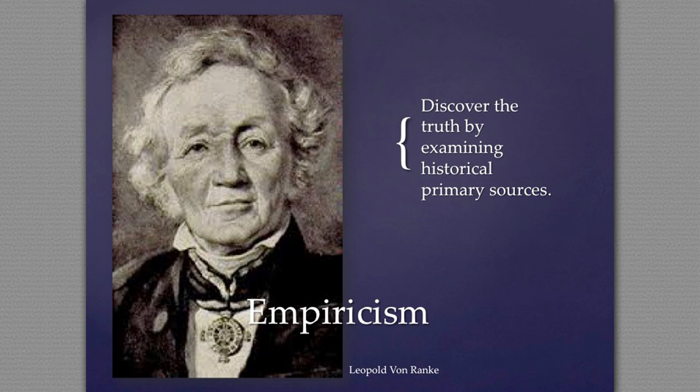Once we get to the 19th century, empiricism emerges. Empiricism is the idea that we need to have an empirical or tangible thing upon which to base our ideas — so it's not about God, now we need proof and documents. This really starts to emerge in the early Enlightenment period in the 16th and 17th centuries, but really after that, in the 19th century, it becomes its own methodology.